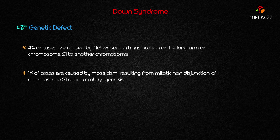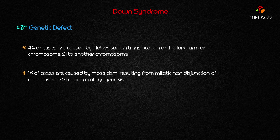About 1% of cases are caused by mosaicism, resulting from meiotic non-disjunction of chromosome 21 during embryogenesis. So the three etiological factors are: trisomy 21 (95%), Robertsonian translocation (4%), and mosaicism (1%).